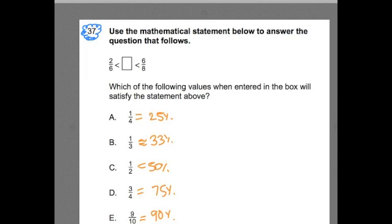And once I've translated them into percents, they're values that I can compare a lot easier. This value here, two-sixths, actually gets reduced to one-third. So that's really 33%, approximately. And this six-eighths gets reduced to three-fourths, and that's really 75%.